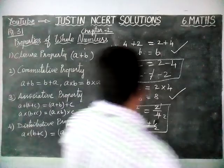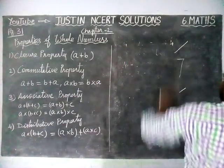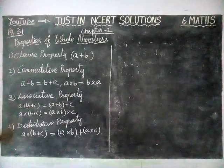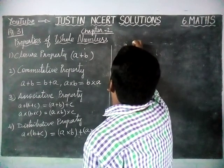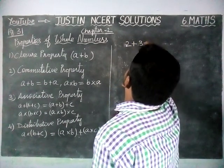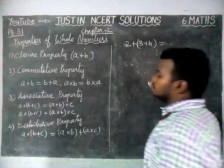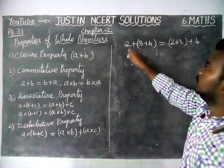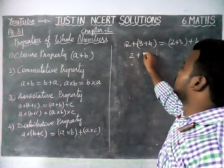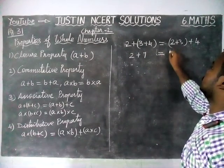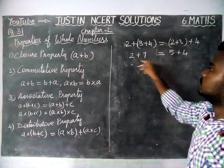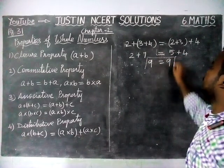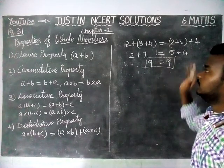Next, we are going to check the associative property. We will take small numbers: 2 plus 3 plus 4 equals (2 plus 3) plus 4. Now, 2 plus (3 plus 4) equals 2 plus 7 equals 9, and (2 plus 3) plus 4 equals 5 plus 4 equals 9. Both sides give whole numbers and the left hand side is equal to the right hand side.